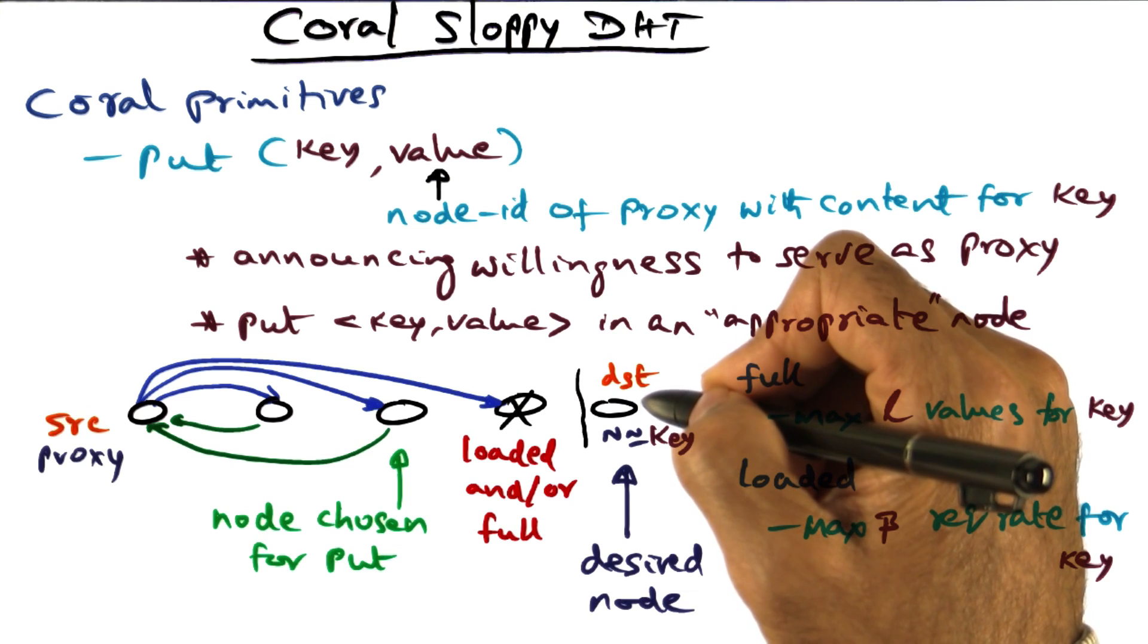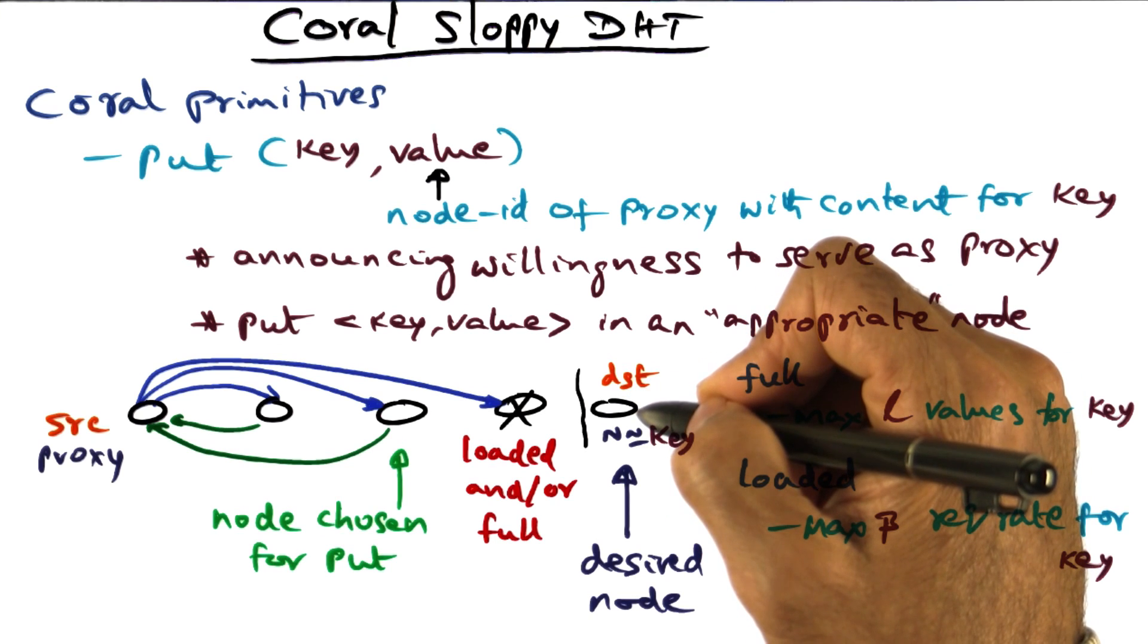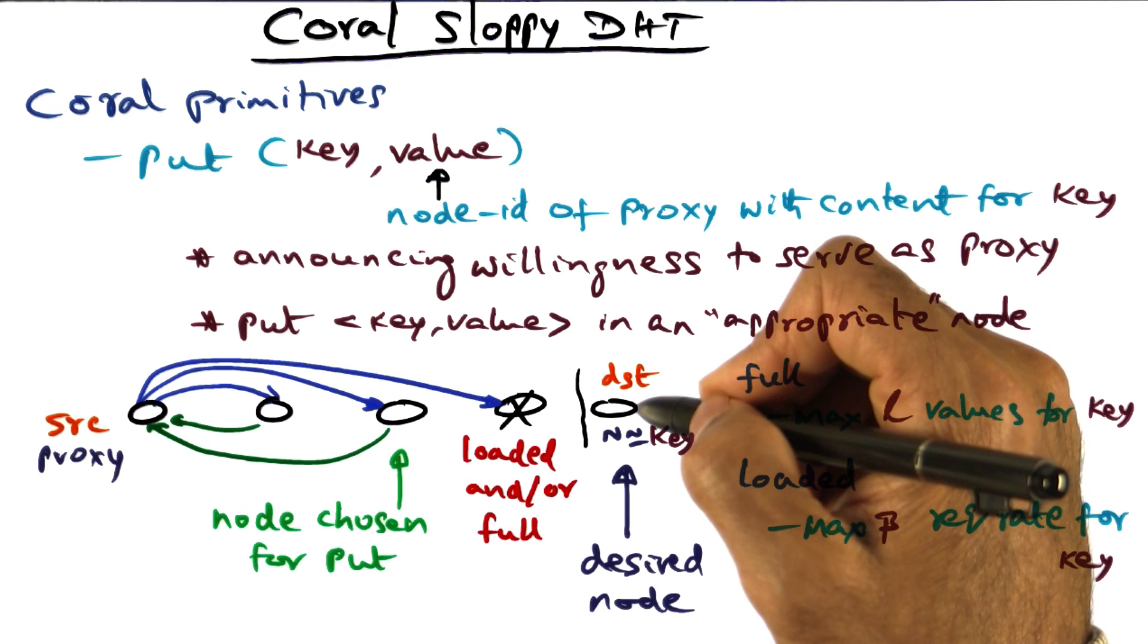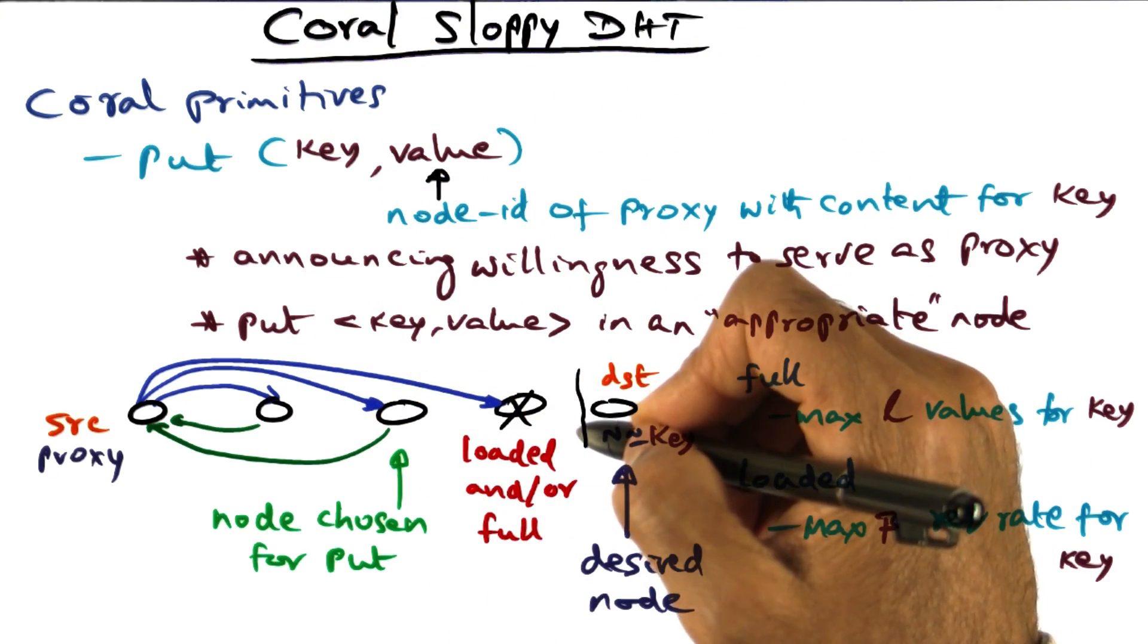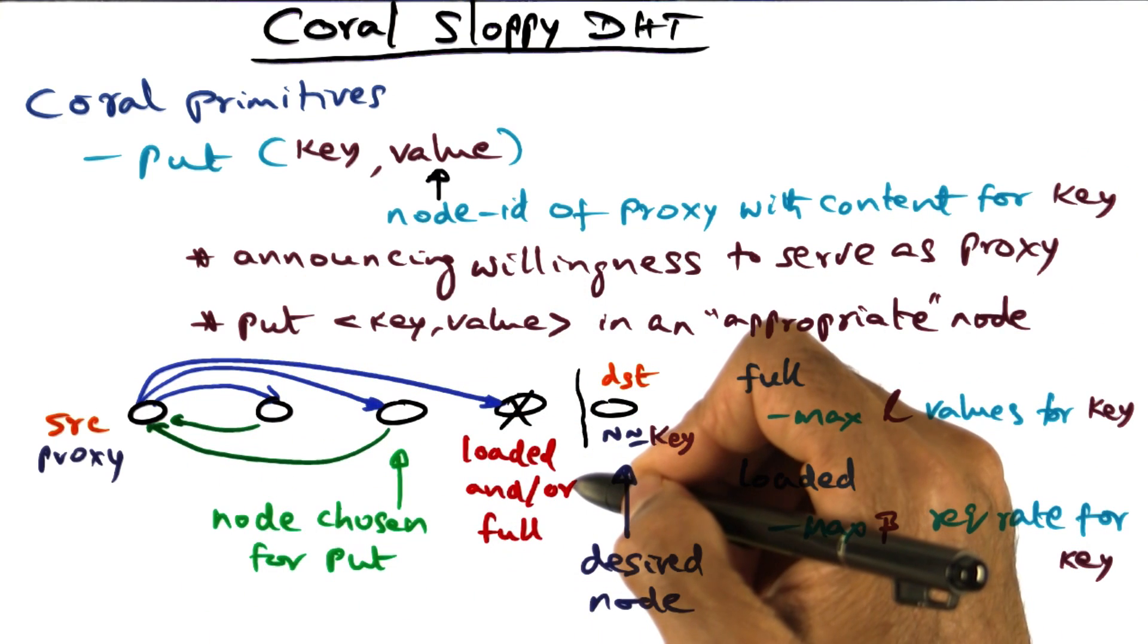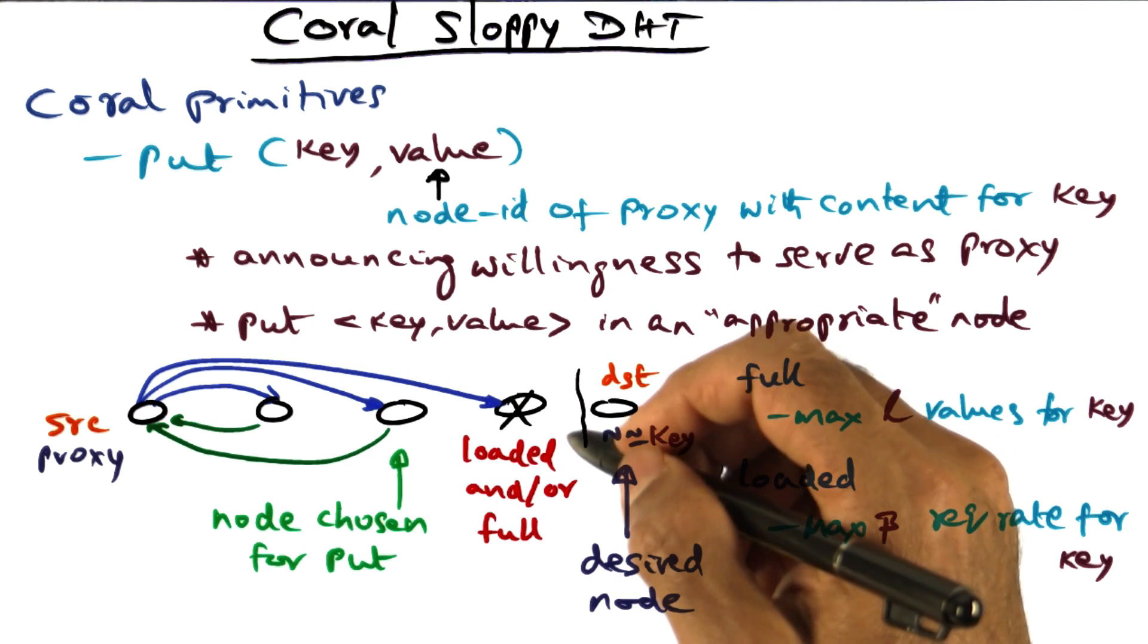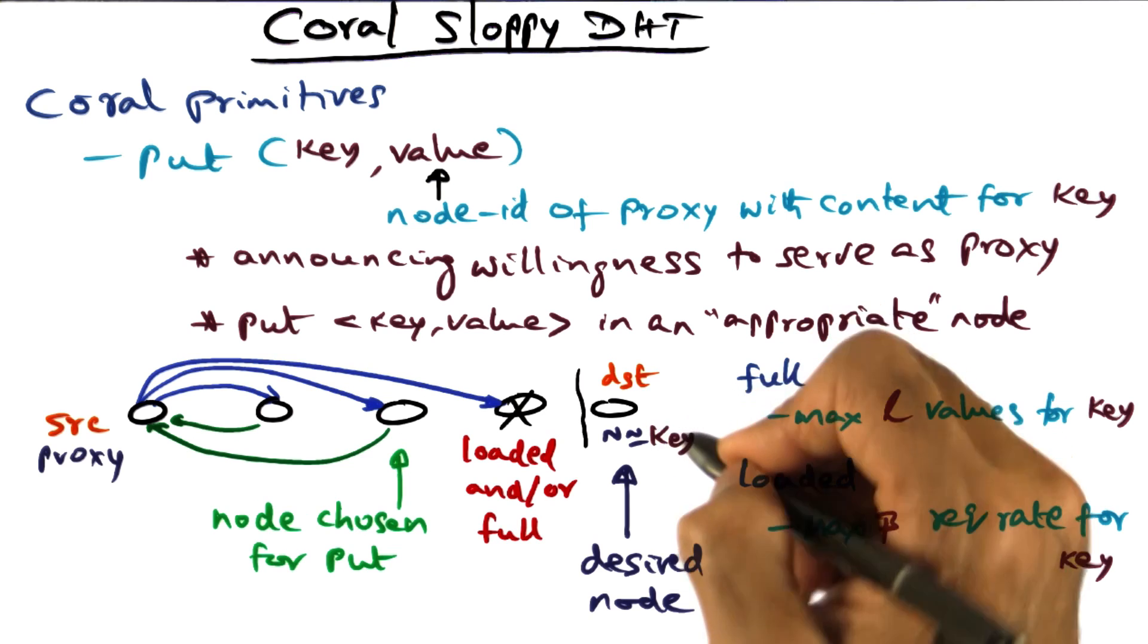But the hope is that if a content is popular enough, then multiple proxies may have gotten the key-value pair. And therefore, they may have gotten the key-value pair, and in turn, when they have gotten the content as well, they would have put their own node IDs as a potential node for the content. And so our metadata server, when we are looking for a particular key, may not necessarily have to be the destination which exactly matches that key.